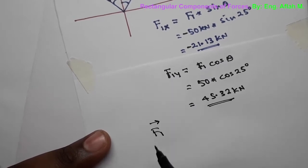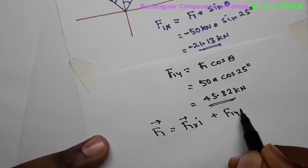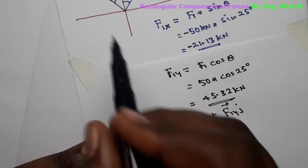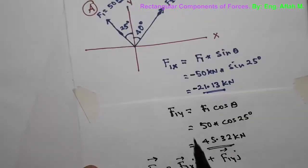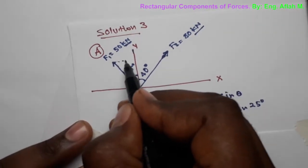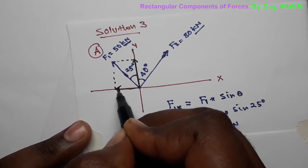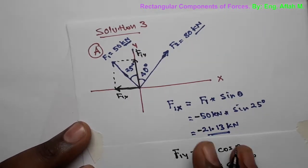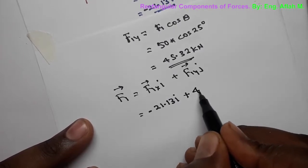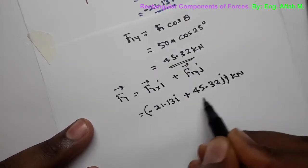In question B, writing F1 in vector form: F1 equals F1X·i plus F1Y·j. Since F1X is negative (second quadrant) and F1Y is positive, with the X component acting horizontally and Y component acting vertically: F1 equals minus 21.13i plus 45.32j kilonewtons.